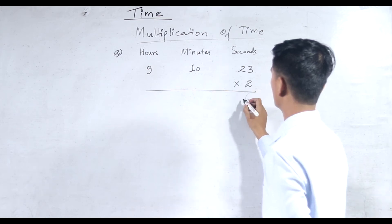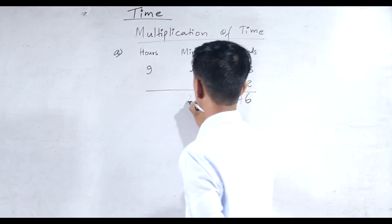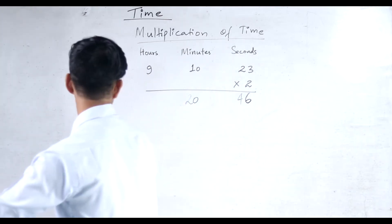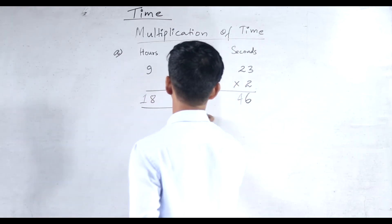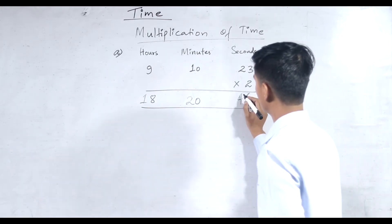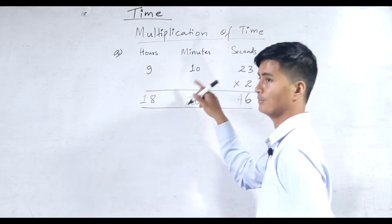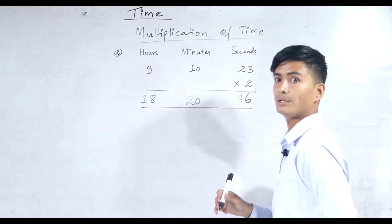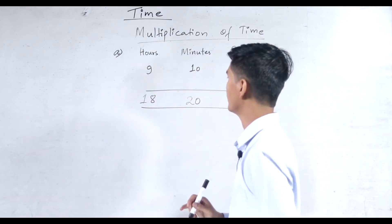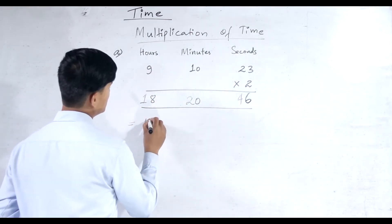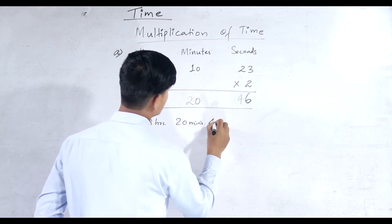So: 2 × 23 = 46; 2 × 10 = 20; 2 × 9 = 18. We got 46 seconds, which is less than 60, so we do not have to convert into minutes. We got 20 minutes, which is less than 60, so we do not have to convert into hours. Finally we have 18 hours, 20 minutes, and 46 seconds.